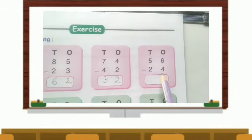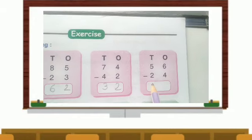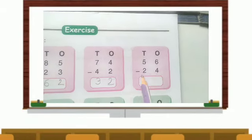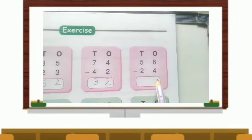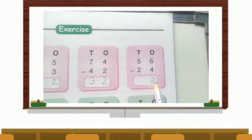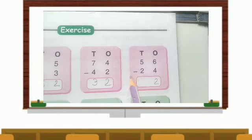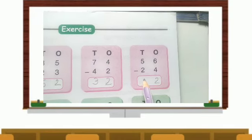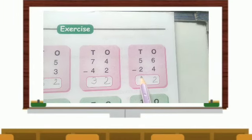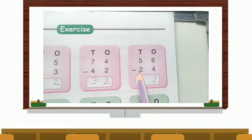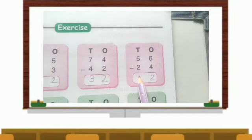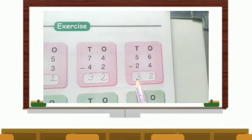Next, 56 minus 24. Under the ones house, 6 minus 4. 6 minus 4 is 2. 5 minus 2. Do it backward or draw sticks. When you do backward, you have to move two places. You get answer 3.